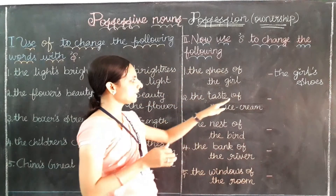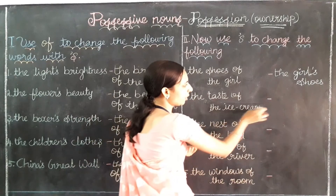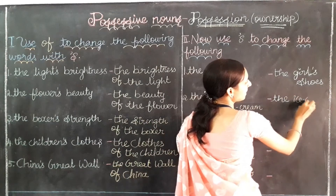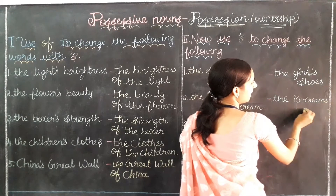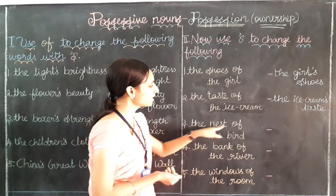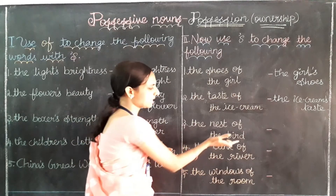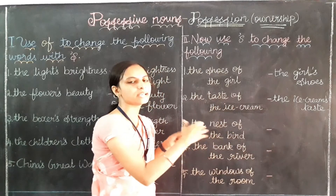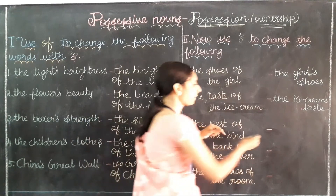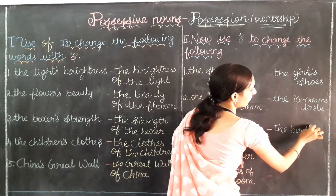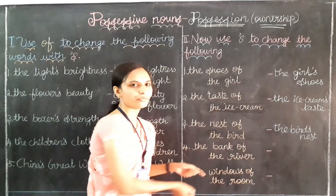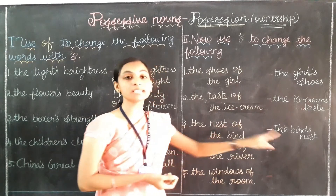Next: 'the taste of the ice cream' becomes 'the ice cream's taste.' After that, 'the nest of the bird' — the bird is the owner, so we write 'the bird's,' add apostrophe-S, then 'nest.' We remove 'the' and 'of' from the original, so the answer is 'the bird's nest.'